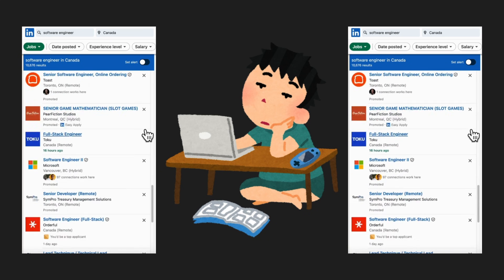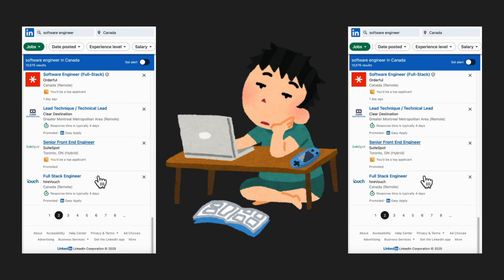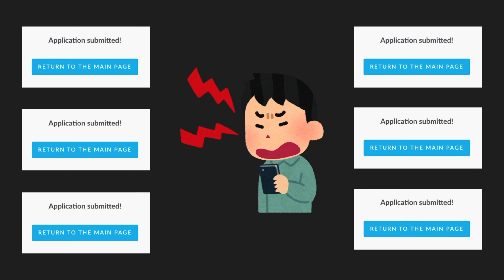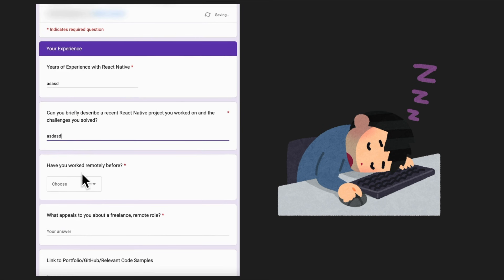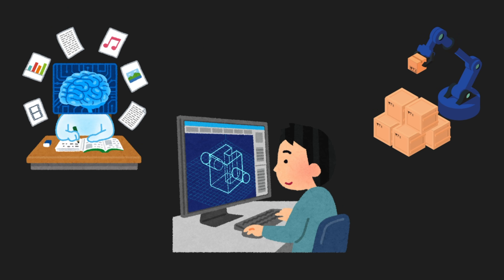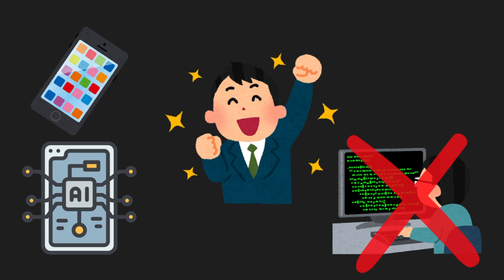Are you tired of spending hours scrolling through endless job boards, applying to hundreds of listings, and hearing nothing back? The job hunting process can feel very overwhelming and repetitive, but what if I told you there is a way to automate most of that process by using software and AI to find a list of job opportunities that are tailored just for you without a single line of code?